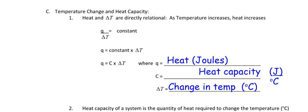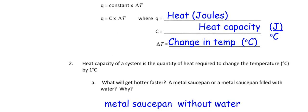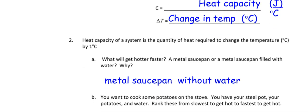Heat capacity is the quantity of heat required to change the temperature by one degree Celsius. What gets hotter faster — a metal saucepan or a metal saucepan filled with water? The metal saucepan without water gets hotter faster. We know something special about water. For cooking potatoes on the stove with a steel pot, potatoes, and water: rank them from slowest to fastest to heat up.